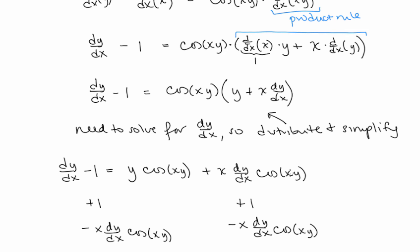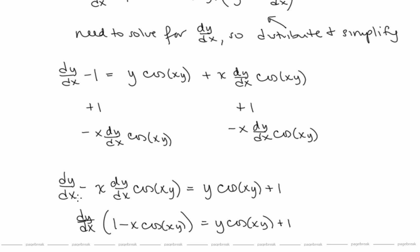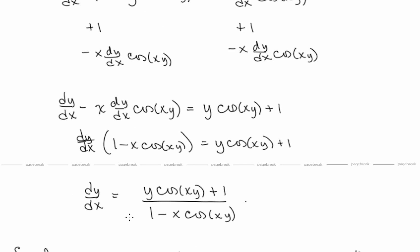We bring all dy/dx terms to one side and constants to the other. Adding 1 to each side and subtracting x·dy/dx·cosine(xy) from each side, we get: dy/dx minus x·dy/dx·cosine(xy) equals y·cosine(xy) plus 1. We factor out dy/dx and divide both sides by the remaining factor, giving us our expression for dy/dx.